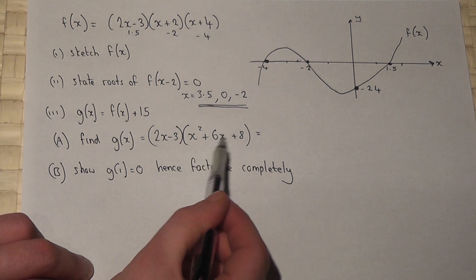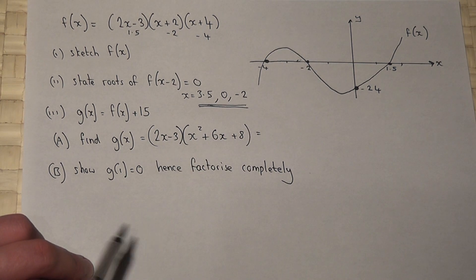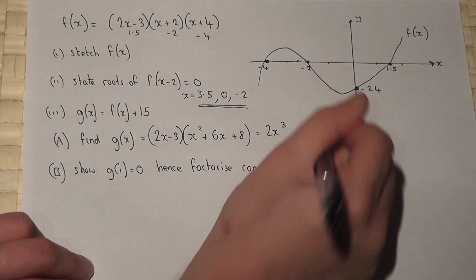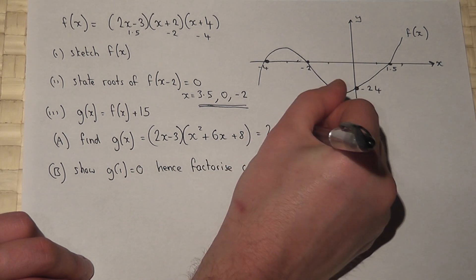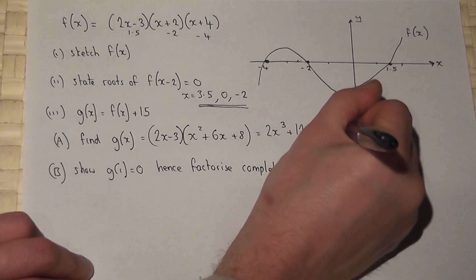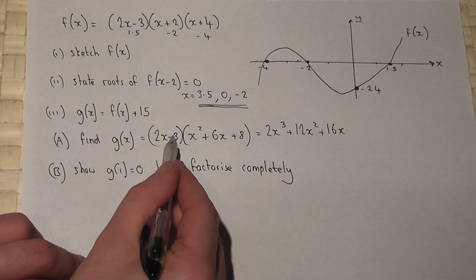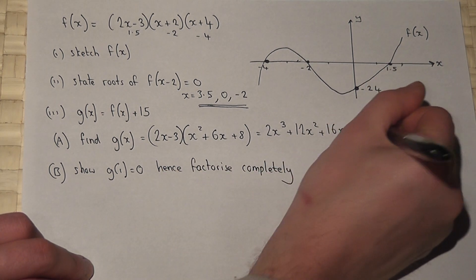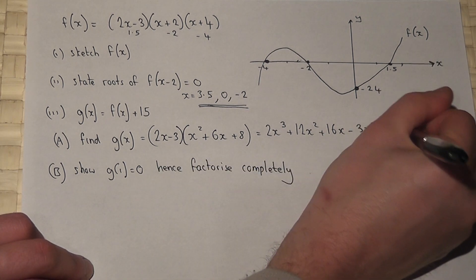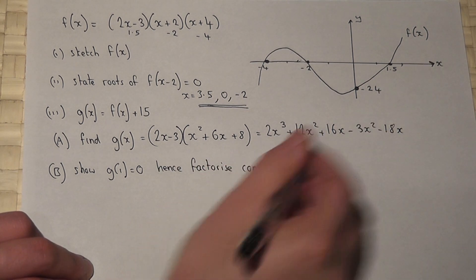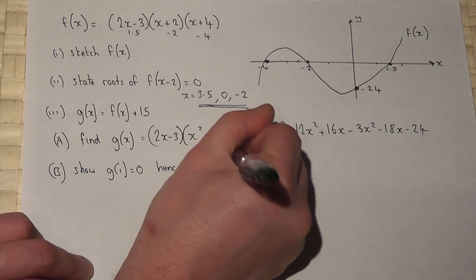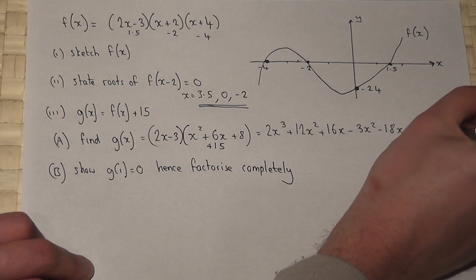We then multiply each term in this bracket by the two terms in the first bracket. So 2x times x squared is 2x cubed. 2x times 6x is 12x squared. 2x times 8 is 16x. Then minus 3 times x squared gives minus 3x squared, minus 3 times 6x gives minus 18x, and minus 3 times 8 gives minus 24. We must also add 15.